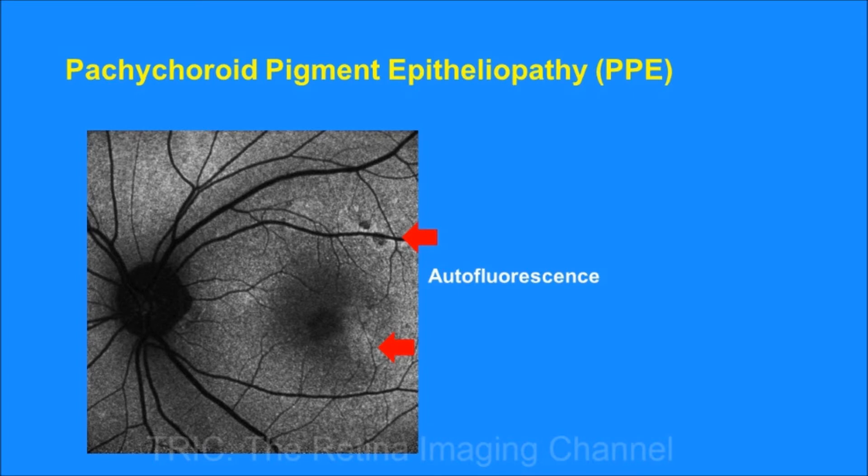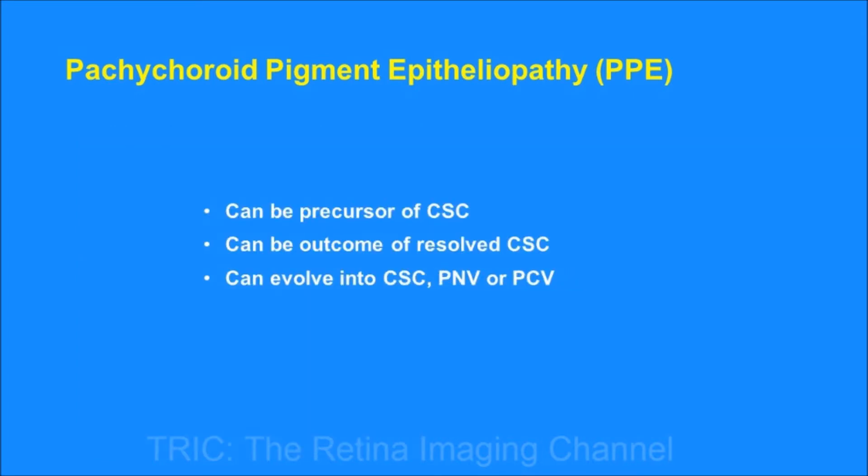We need to understand that pachychoroid pigment epitheliopathy can be a precursor of central serous chorioretinopathy. It can also be an outcome of resolved CSC, and it can evolve into pachychoroid neovasculopathy or polypodial choroidal vasculopathy. It is a continuous process, and such eyes need close follow-up.